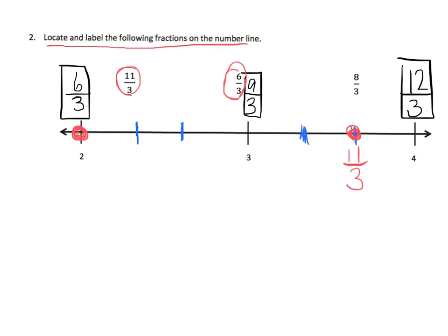And then the last one, 8 thirds. Well, if this is 9 thirds, then 8 thirds is right next door. Or, if this is 6 thirds, you could say then 7 thirds, 8 thirds. And there's 8 thirds. And now we have located all three of those fractions.